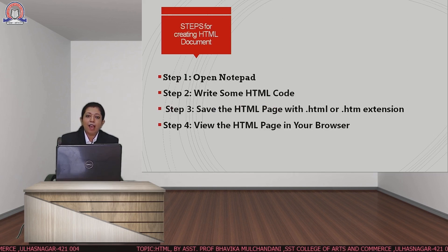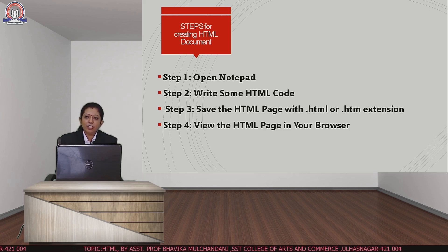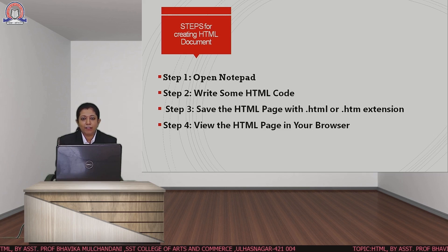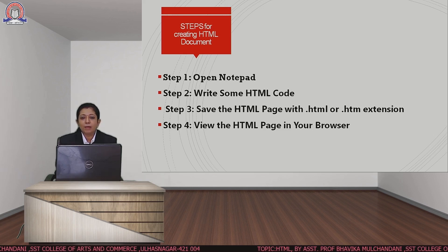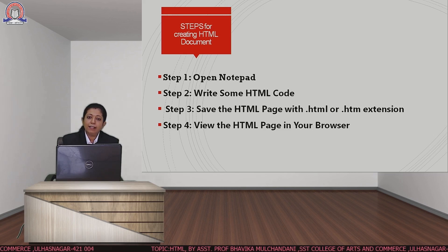Now let us see how to create an HTML document. For creating the HTML document, the steps are shown on the screen. First, open Notepad or any text editor, then write down the HTML code for the document. Save the file using the .html or .htm extension. This file can then be viewed using any web browser like Chrome or Internet Explorer.